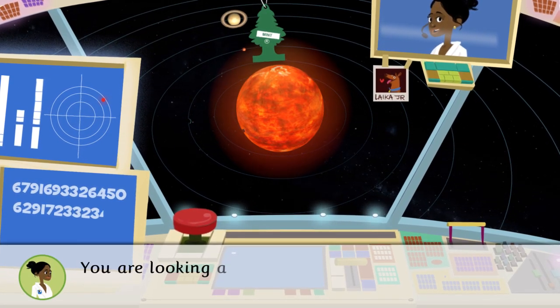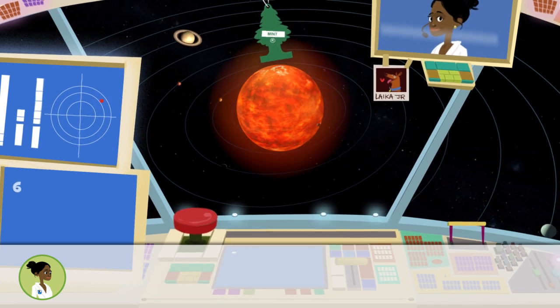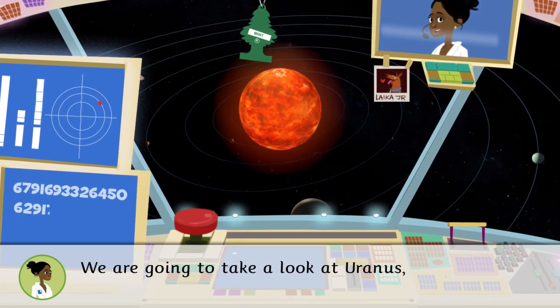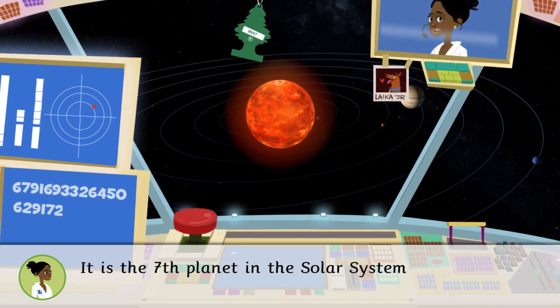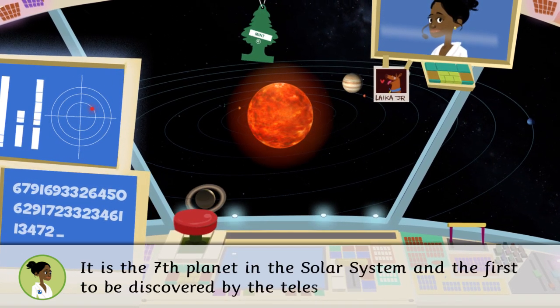You are looking at the solar system. We are going to take a look at Uranus. Do you want to come? It is the seventh planet in the solar system and the first to be discovered by telescope.